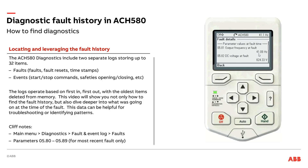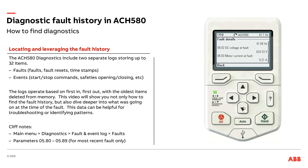Scrolling down, I can see what information is available to see how the drive was responding at the time of fault. I can see that I was running at 41.09 Hertz when it faulted. I can also see the DC bus voltage, which is always a handy item for troubleshooting — it can help give you some indication if maybe there's a problem on the incoming power quality, or maybe you were trying to slow down a very large load too quickly with a lot of inertia regenerating back to the drive, pumping up the DC bus voltage.